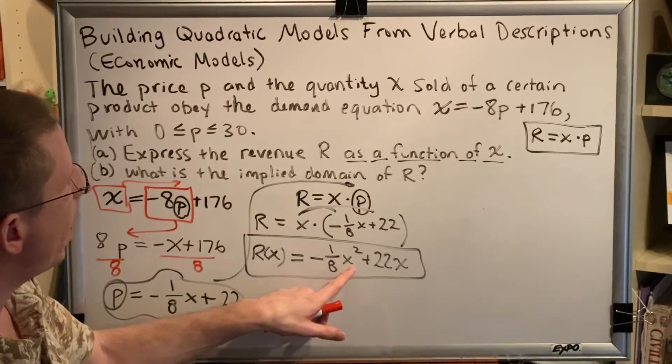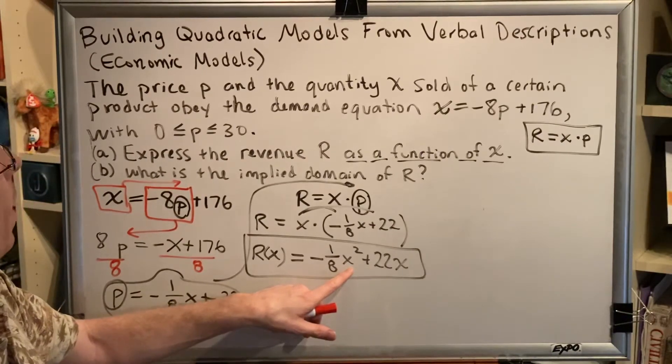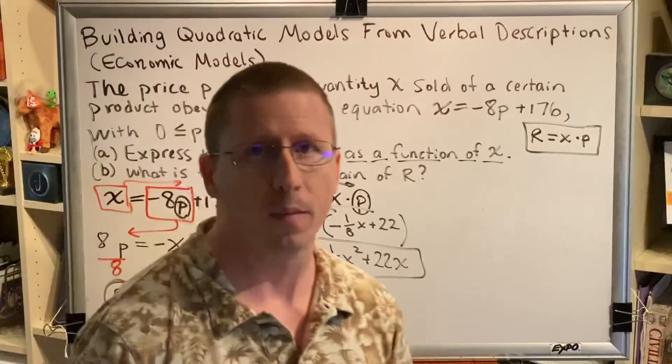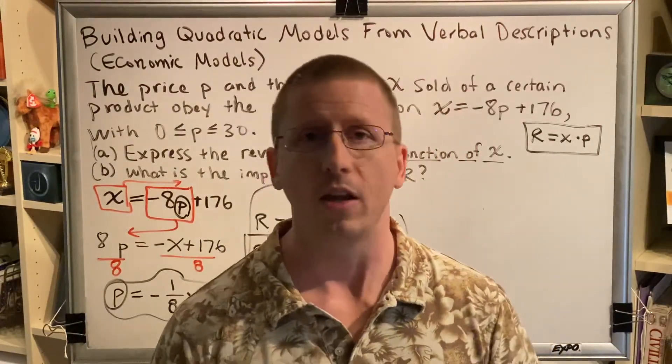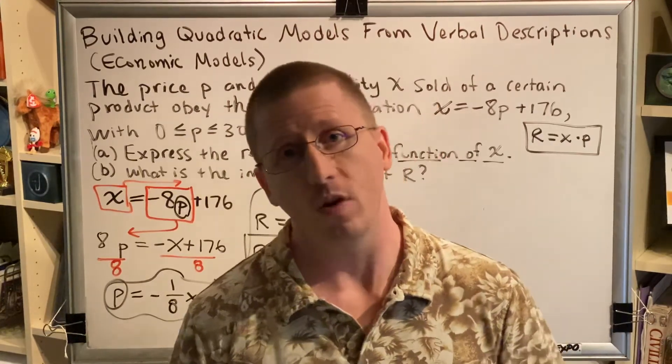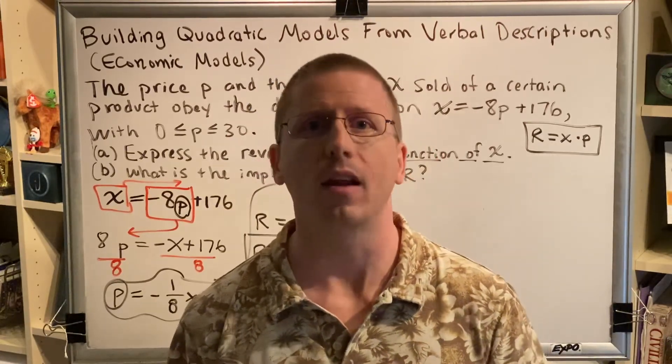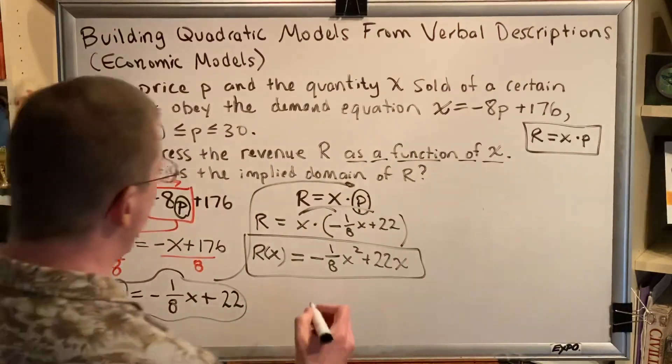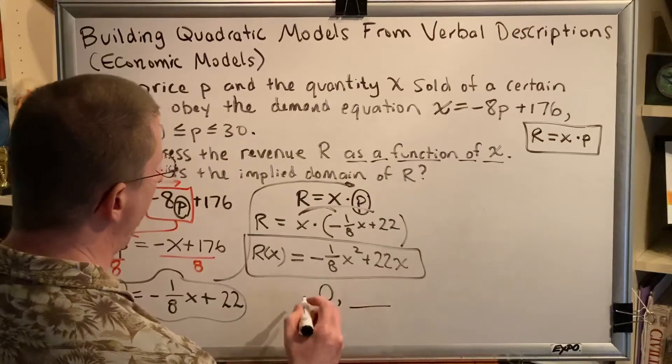However, domain is a collection of all the possible values of x. And in this problem, x represents the quantity of items sold. So for example, can you sell negative three items? No. Can you sell zero items? Yes. Can you sell 800 items? Yes. So what that tells me is that x cannot be negative, but it can be zero or positive. And based on that idea, my domain is probably going to go from zero up until some value.